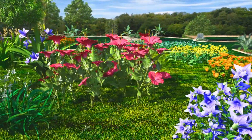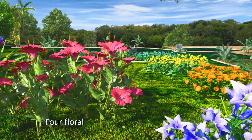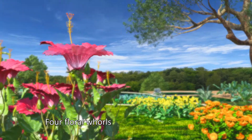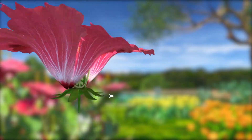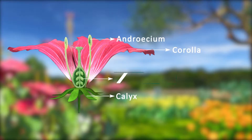Normally, each flower has four floral whorls. They are calyx, corolla, androecium, and gynoecium.